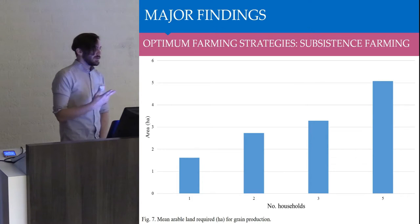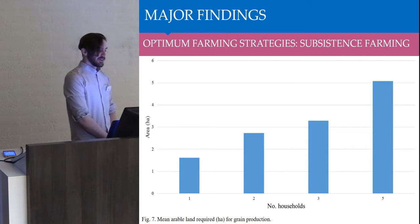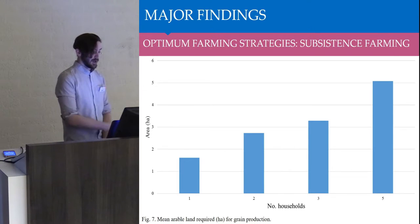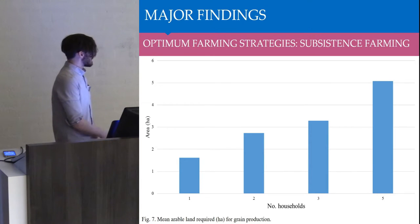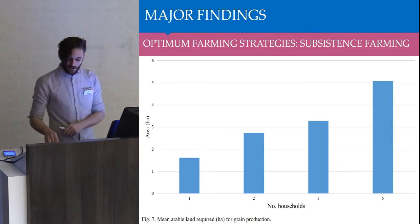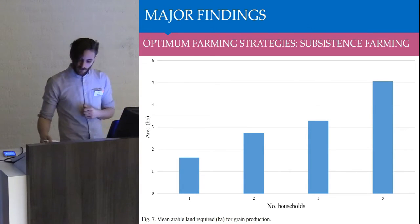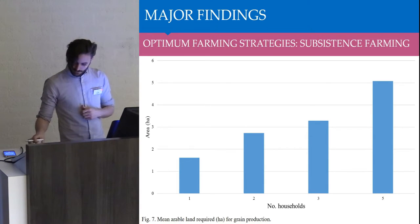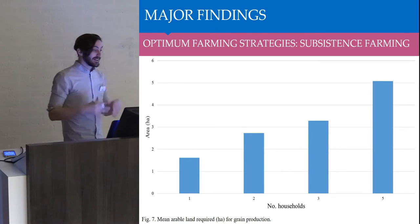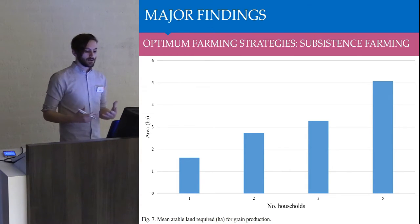Moving now onto the major findings. We began with experimenting in a randomly generated landscape to try and understand the optimum farming strategies for settlements under a subsistence economy. Under a subsistence economy, figure seven shows the mean area of land required for grain production, and it corresponds to just in excess of one hectare per household. However, the area of land that they need access to is probably higher, because it's largely assumed that in the late Iron Age pre-Roman period, a biennial fallow was taking place. So each year they may only cultivate one hectare, however they will need two hectares in total within their catchment area to produce sufficient food.